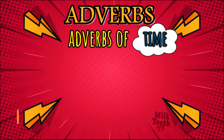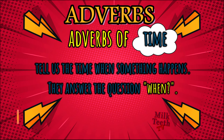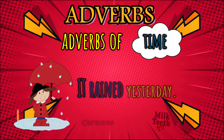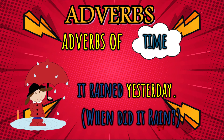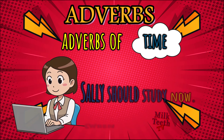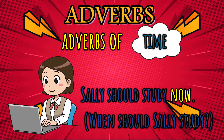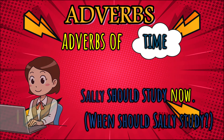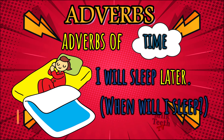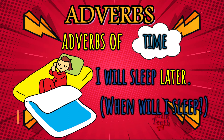Adverbs of time tell us the time when something happens. They answer the question 'when.' For example: it rained yesterday — 'rained' is the verb, and when did it rain? Yesterday. So 'yesterday' is the adverb of time. I will sleep later — 'sleep' is the verb, and when will I sleep? Later. So 'later' is the adverb of time.